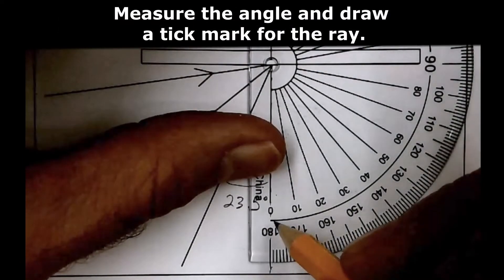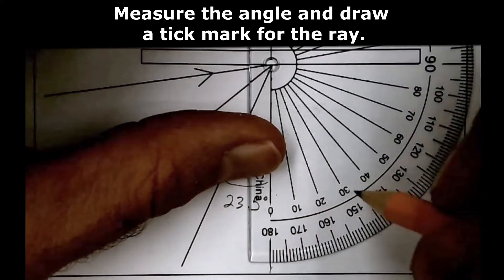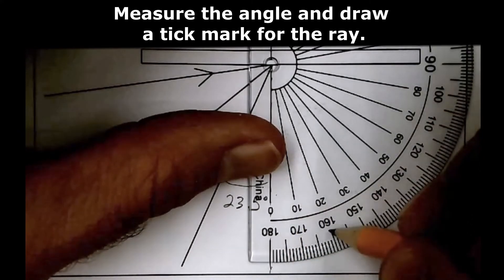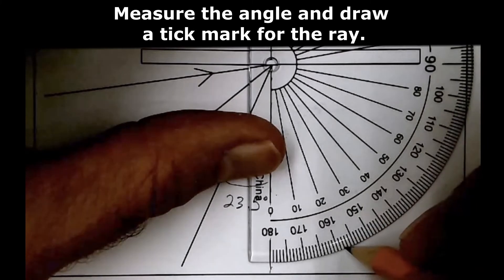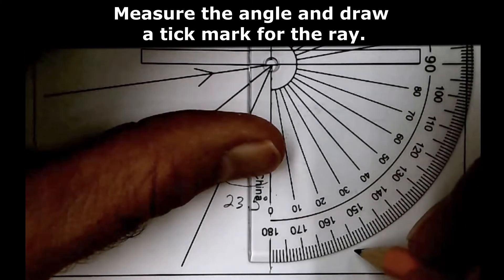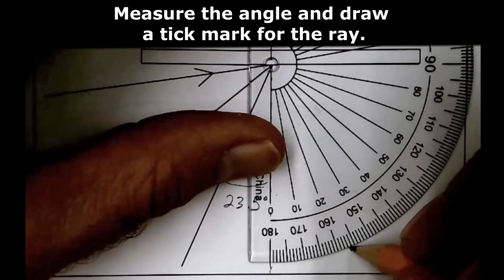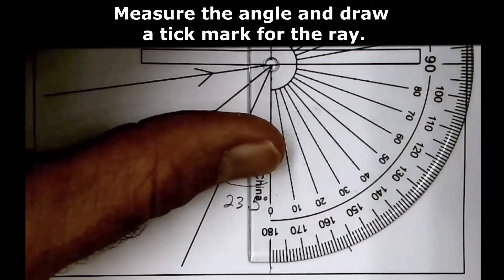Now we want to measure the same angle, 23.5 degrees. So this mark here represents 20. Here's 3, and 23.5 will bring us right here.